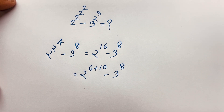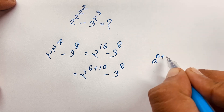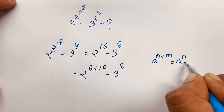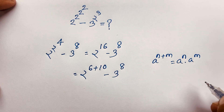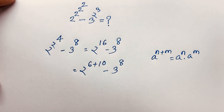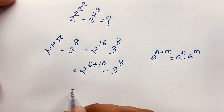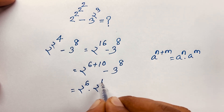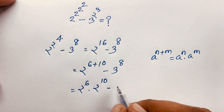Now, we know that a to the power n plus m equals a to the power n times a to the power m. According to this law, you can see this expression becomes 2 to the power 6 times 2 to the power 10, minus 3 to the power 8.